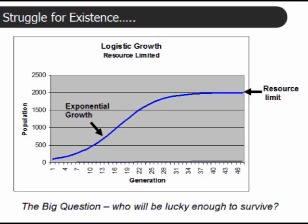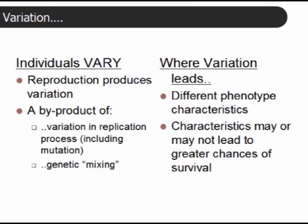And the big question that comes into existence then is, if the population is going to be contained in this way, who are going to be the lucky individuals who will survive and reproduce? This is, of course, answered by the variation that exists in a species. Individuals vary.